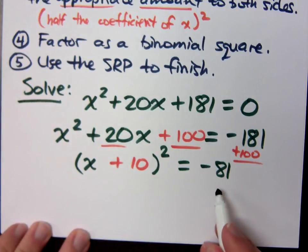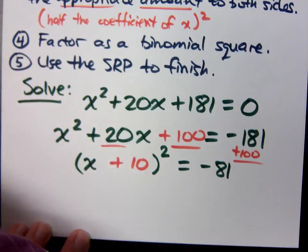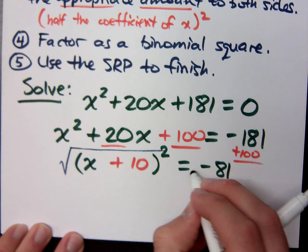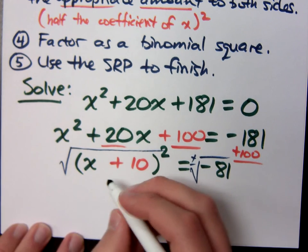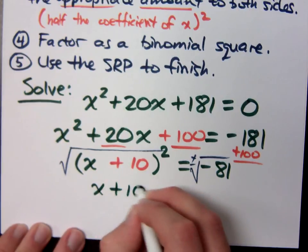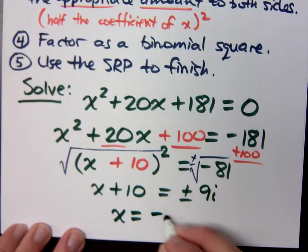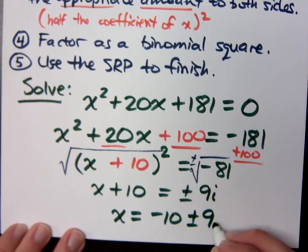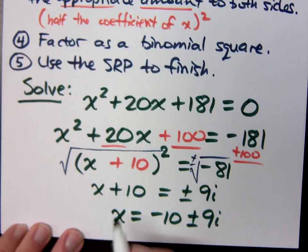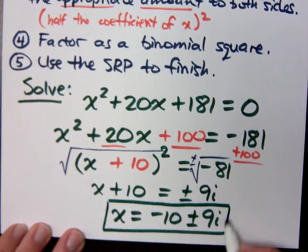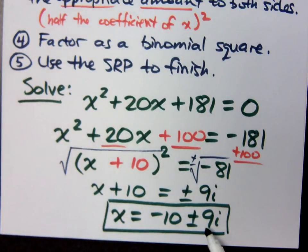Now that I've got this, I've got a square. Take the square root of both sides: x plus 10 equals plus or minus the square root of negative 81. What's the square root of negative 81? 9i. So x equals negative 10 plus or minus 9i. You could separate this into negative 10 plus 9i and negative 10 minus 9i, but it doesn't really help.